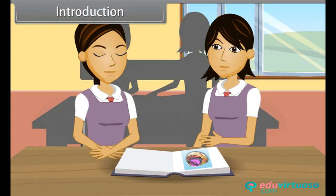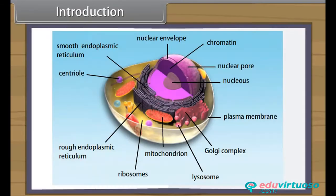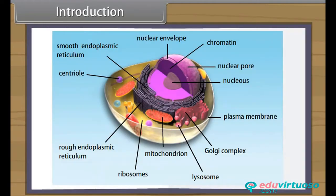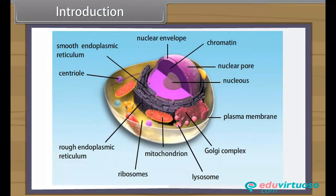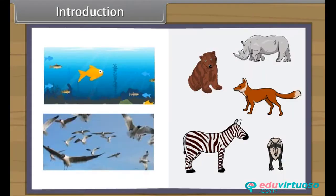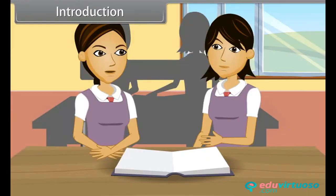Animal cells do not have cell walls. Most of the animals are mobile. Animals are aquatic, e.g. fishes, or terrestrial, e.g. reptiles, mammals, etc., or aerial, e.g. birds, on the basis of their habitat.